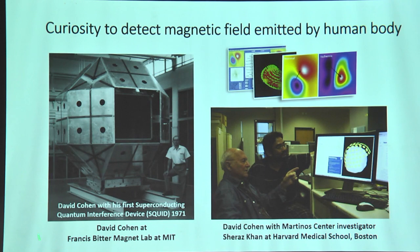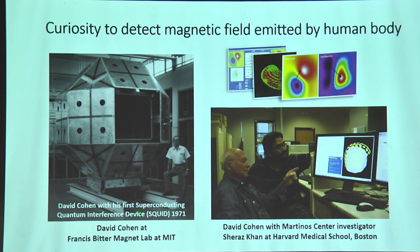With that I take you back to 1971, where for the first time Professor David Cohen dared to make a device where he could use human subjects, make them sit in a container, and record their brain activity. The device he used is called a superconducting quantum interference device. He retired in 1993 but is still active in the lab.